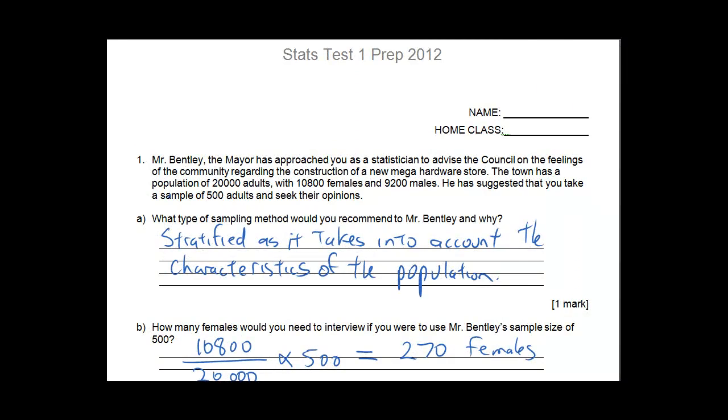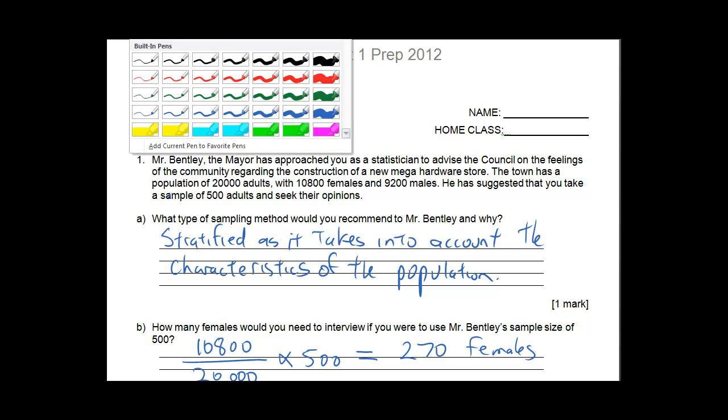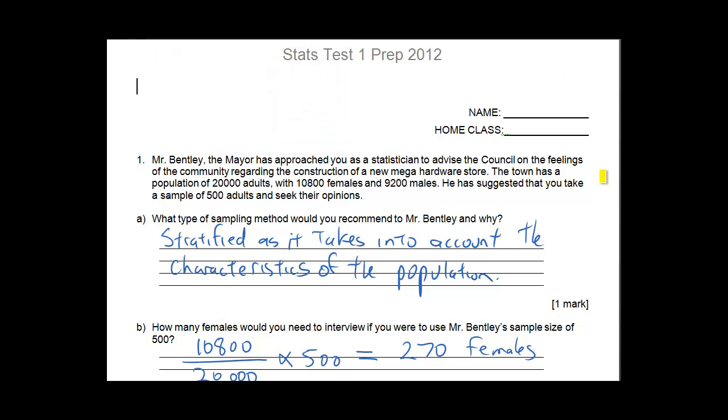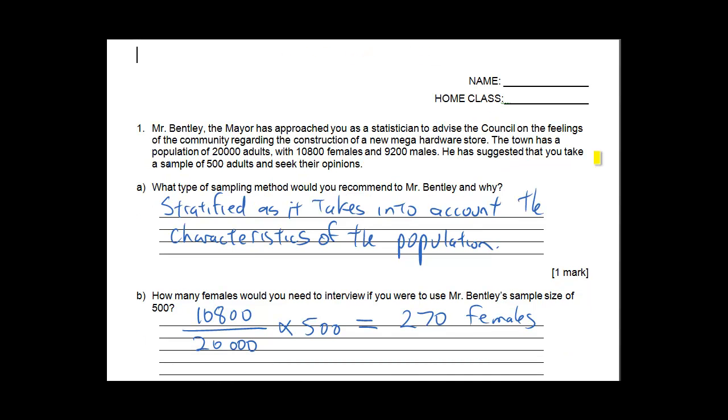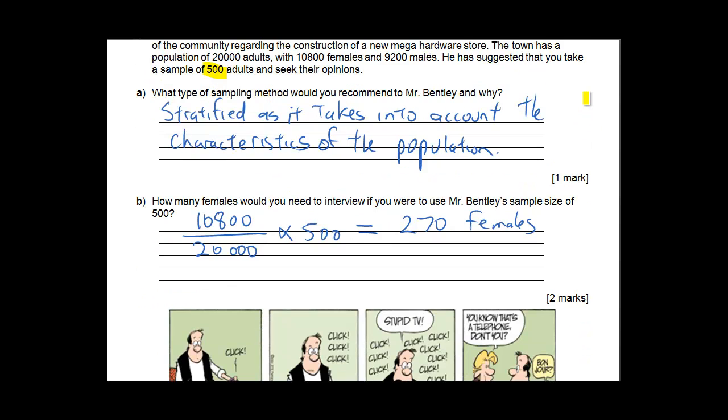Here's a talk through of the solutions to the test prep you've just done for the upcoming tests in statistics. The first question is looking at a survey that's been taking place with data about different splits within that population. You've got 10,800 females and 9,200 males and they're looking at doing a survey of 500 people. What kind of survey would be best? You need to talk about the fact that you've got different characteristics within that population. You've got more females than males so therefore your survey size and survey design has to represent the population.